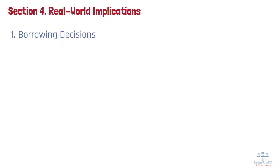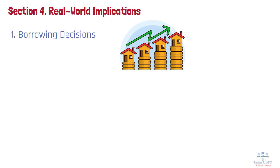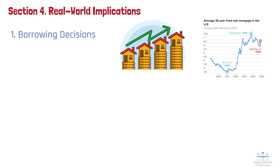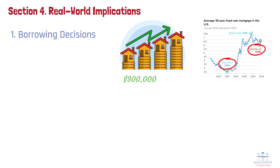Why do interest rates matter so much? Borrowing decisions are directly influenced by interest rates, as seen in the housing market. During 2020–2021, historically low mortgage rates below 3% spurred a housing boom, while higher rates exceeding 6% in 2022–2023 cooled the market significantly. The impact is tangible — even a 1% change in interest rates on a $300,000 mortgage translates to a difference of over $200 in monthly payments.